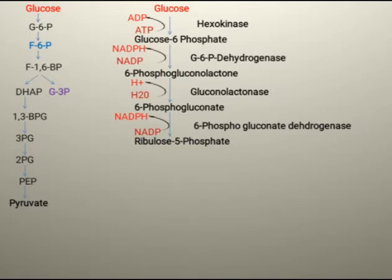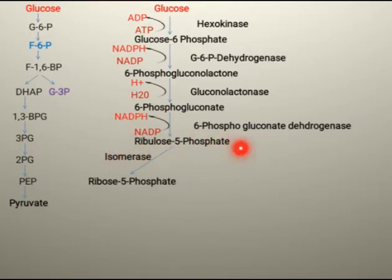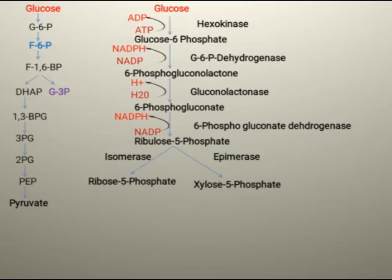Ribulose 5-phosphate can change into ribose 5-phosphate with the help of isomerase enzyme. The isomerase enzyme converts ribulose 5-phosphate into its isomer ribose 5-phosphate. An epimerase enzyme can also act on ribulose 5-phosphate to change its stereochemistry and convert it into xylose 5-phosphate.